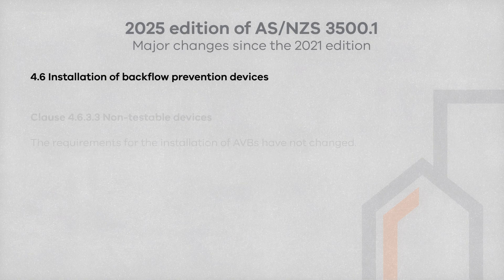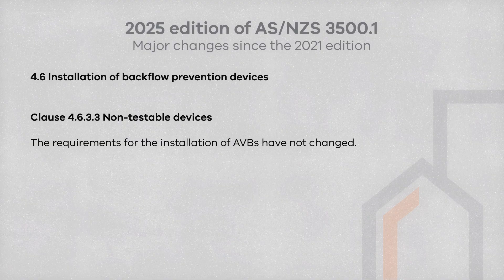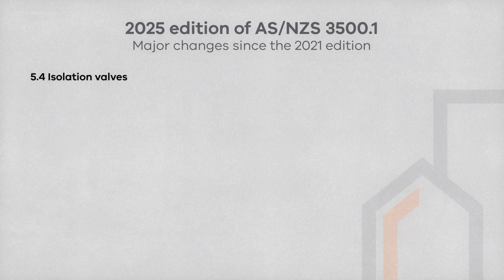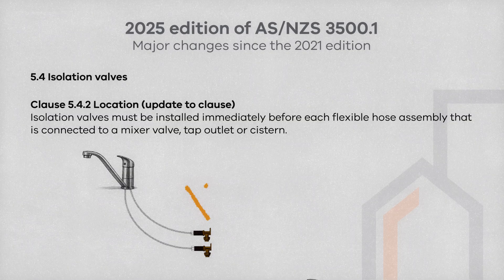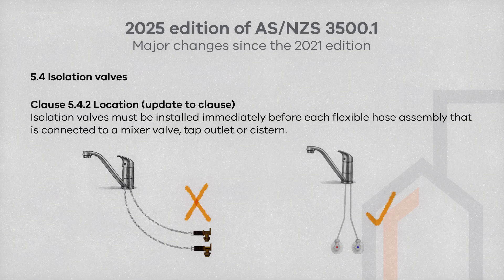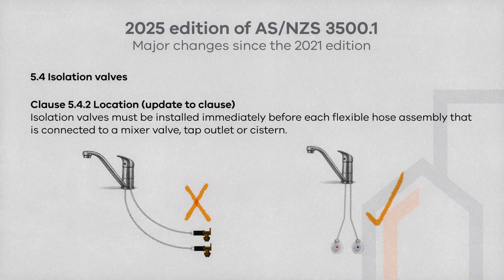Clause 4.6.3.3 has now removed AVBs and included their requirements in the list of testable devices. There is also an update in Clause 5.4 for the locations of isolating valves, which now additionally requires isolation valves to be installed immediately before each flexible hose assembly that is connected to a mixer valve, tap outlet, or a cistern. This is in Subclause L of Clause 5.4 and applies to circulatory piped plumbing systems.